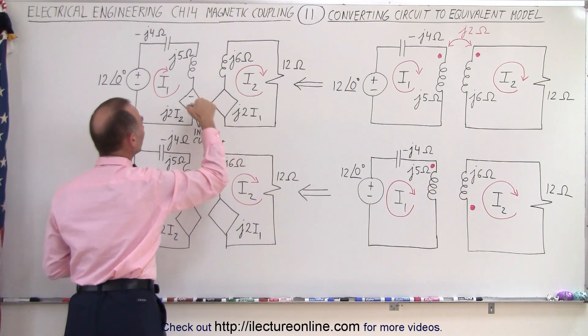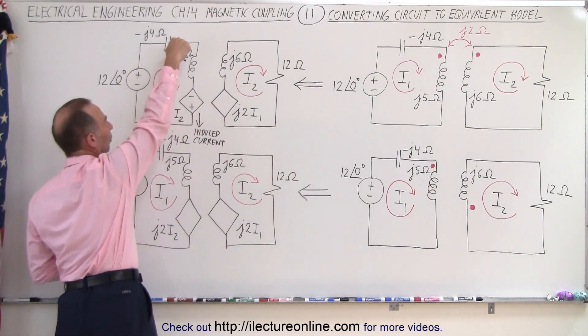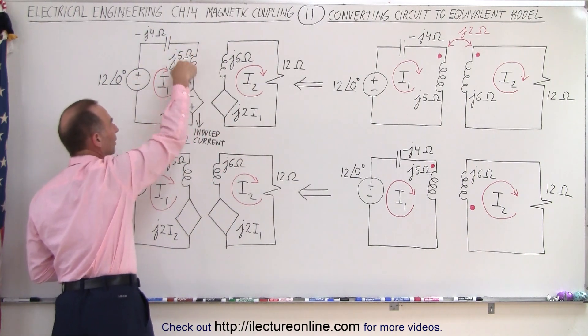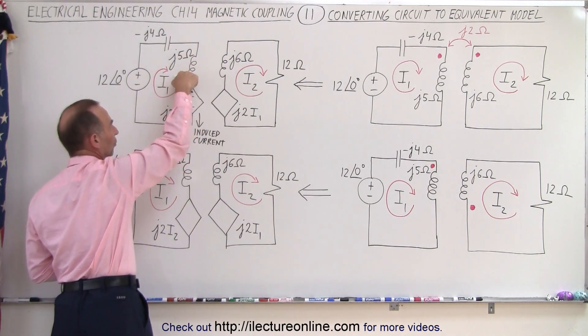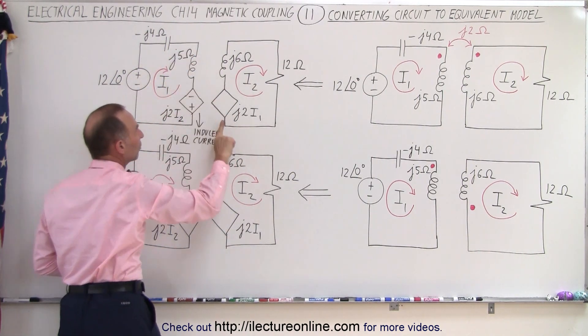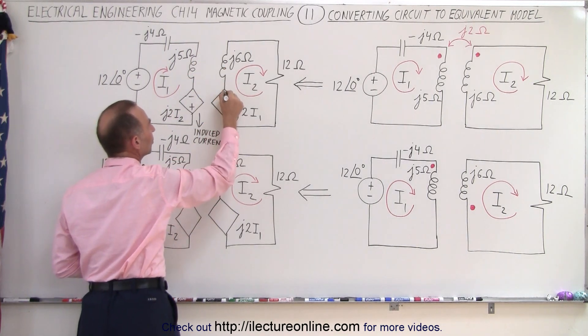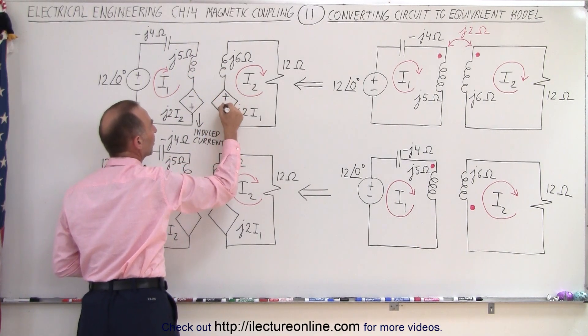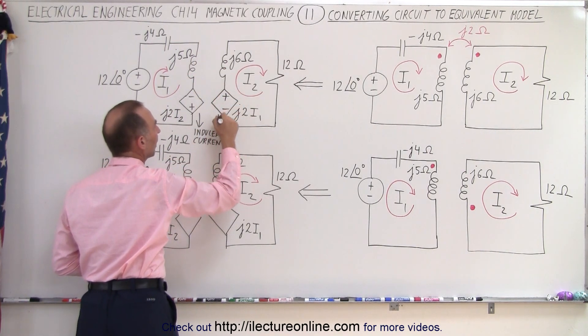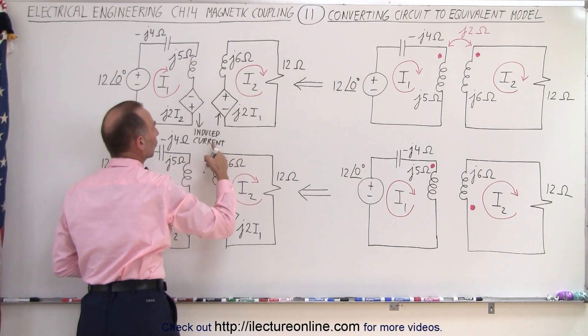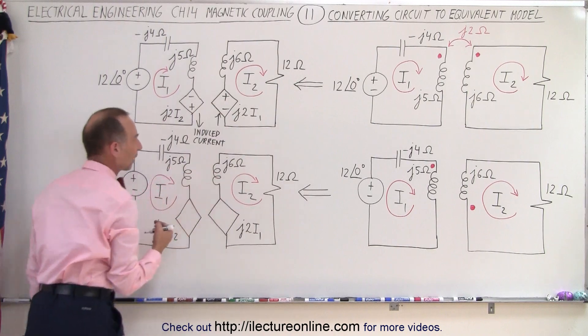Over here, notice that the current will go in this direction in circuit 1, which means the induced voltage will be in the opposite direction. So we have a plus there and a minus there, and the induced current will be in that direction.